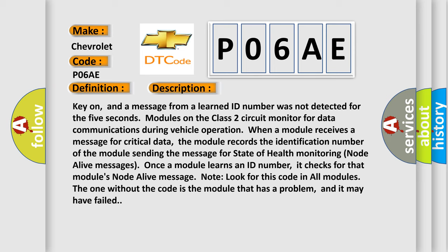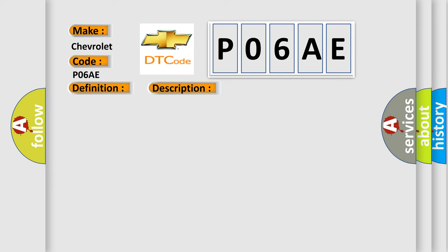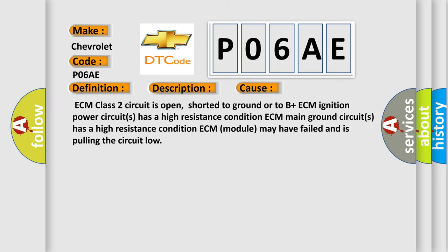This diagnostic error occurs most often in these cases: ECM class 2 circuit is open, shorted to ground or to B plus. ECM ignition power circuits has a high resistance condition. ECM main ground circuits has a high resistance condition. ECM module may have failed and is pulling the circuit low.